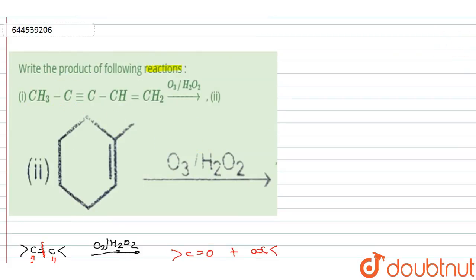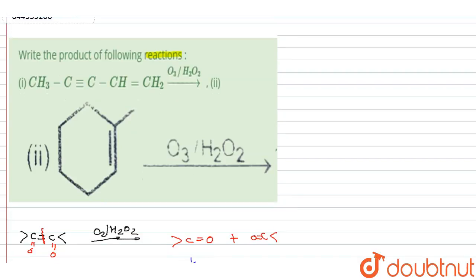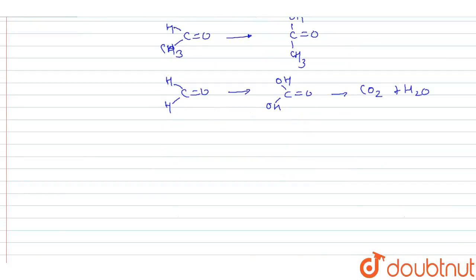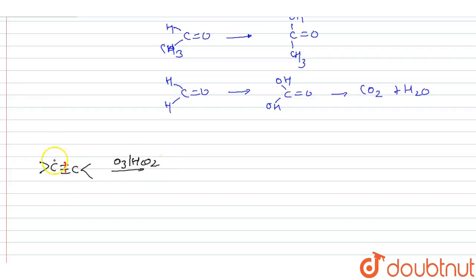If a triple bond is present, how do we solve the question? If a triple bond is present and O3/H2O2 is given, we have to break two bonds — one bond remains — and attach a double bond O and double bond O on each carbon. So this is the product formed.